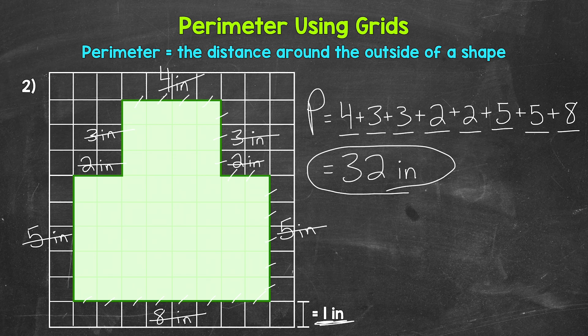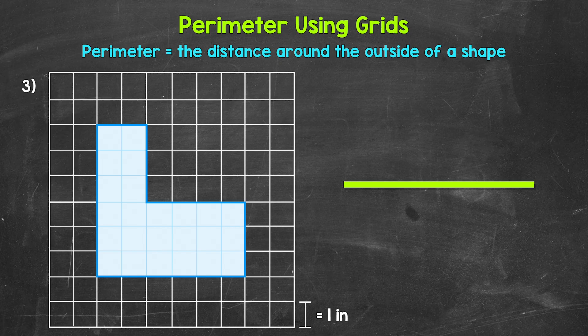Let's move on to number three, where you are going to try an example on your own. Have a piece of paper and a pencil ready. Find the perimeter by adding the side lengths — we are working with inches here for number three. You can either pause the video and work through this, or let the video play and I'll give you a minute and a half. Whenever you're ready, move ahead to the answers and check your work.